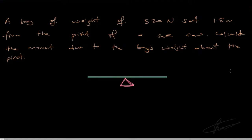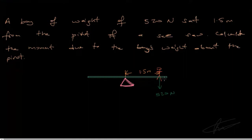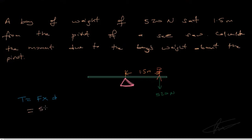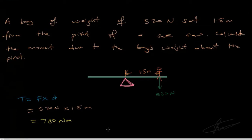We have a seesaw like this, and the boy is sitting at a distance of 1.5 meters from the pivot with a weight of 520 newtons. The moment T equals the weight multiplied by the perpendicular distance d. So we substitute: 520 newtons multiplied by 1.5 meters gives us 780 newton-meters.